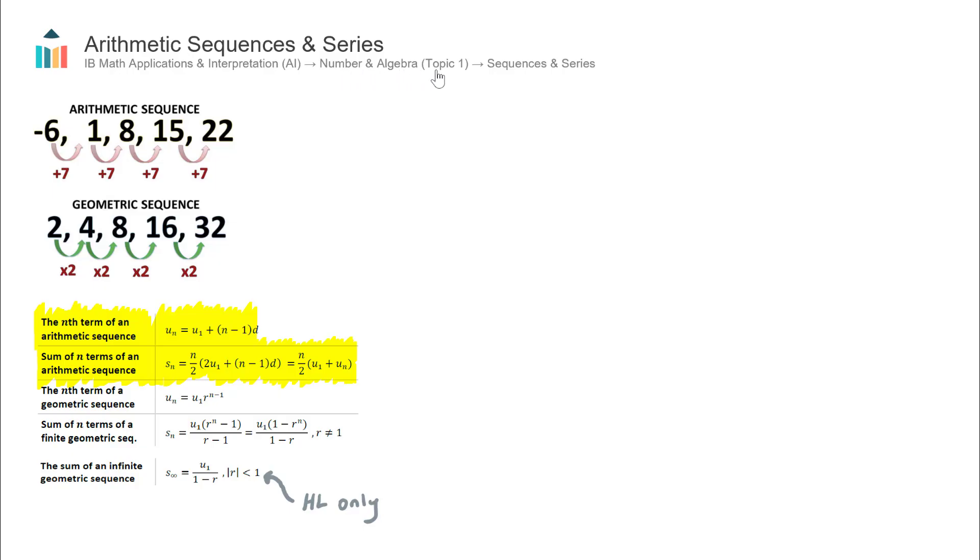Arithmetic sequences and series is one of the two types of sequences you'll encounter. You'll encounter either arithmetic or geometric. The difference between the two is that arithmetic goes up or down by a common difference. Whereas geometric sequences go up by a common ratio or a multiplier, as you can see here, the multiplication of 2.